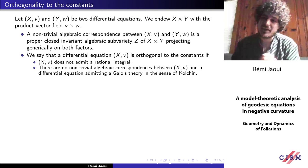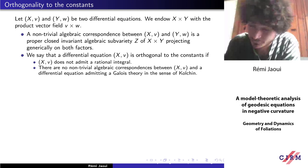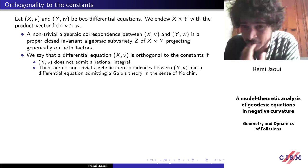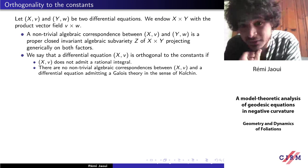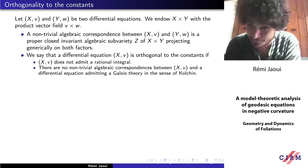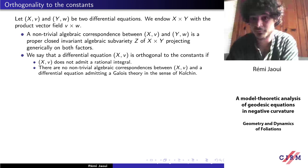What does it mean that a differential equation is orthogonal to the constants? It means there is no algebraic correspondence with a differential equation admitting a differential Galois theory in the sense of Kolchin — accounting for the fact that Kolchin requires suppressing rational integrals. The first question is how to prove that the geodesic differential equation has no algebraic correspondence with equations admitting Kolchin-type Galois theory. For this, I proved a theorem in my thesis which applies to the geodesic equation in negative curvature.